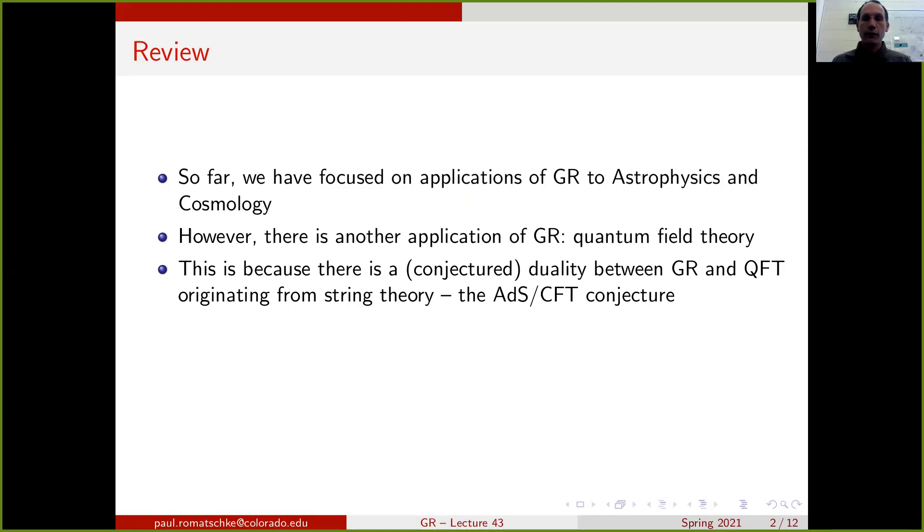This curious way of applying GR to solve quantum field theory problems is because there is a conjectured duality between general relativity on one side and quantum field theory on the other side. This duality originally came from string theory and is known as the AdS-CFT conjecture. This duality is very powerful and it uses general relativity methods to solve hard problems in quantum field theory.